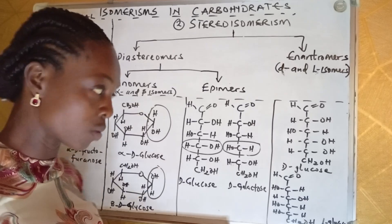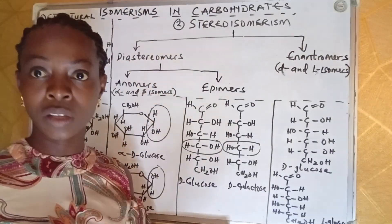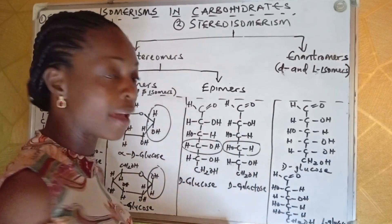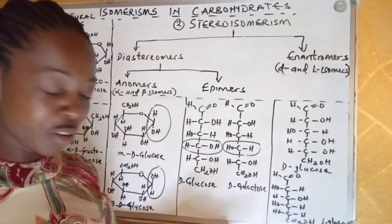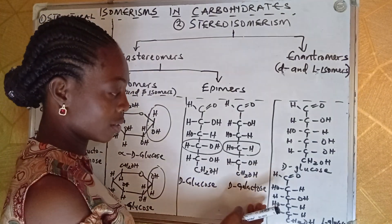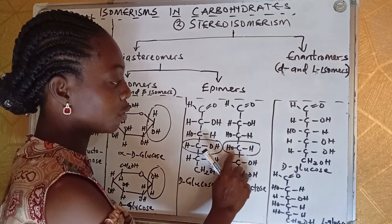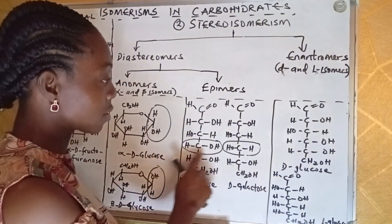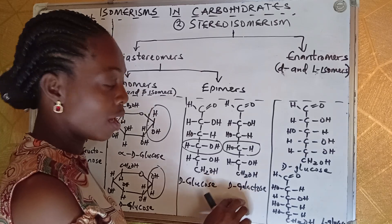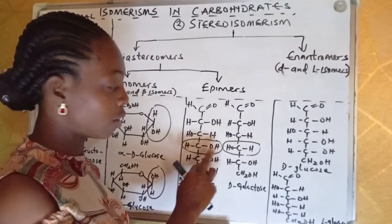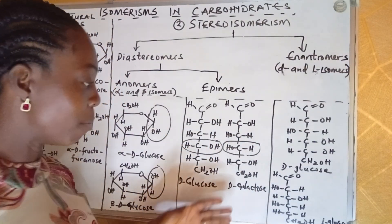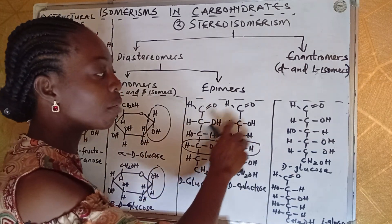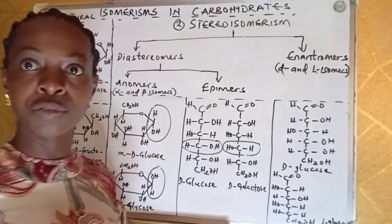For epimers, the difference also is only around one carbon. Glucose has two epimers: galactose and mannose. What's the difference between glucose and galactose? It's only at carbon 4 — galactose has the hydroxyl and hydrogen groups swapped compared to glucose. For mannose, this difference will be seen at carbon 2 and not at carbon 4.